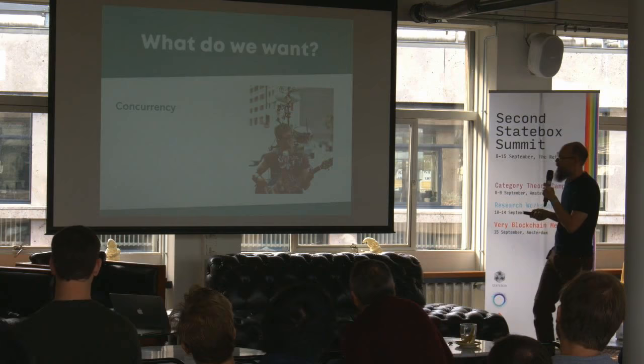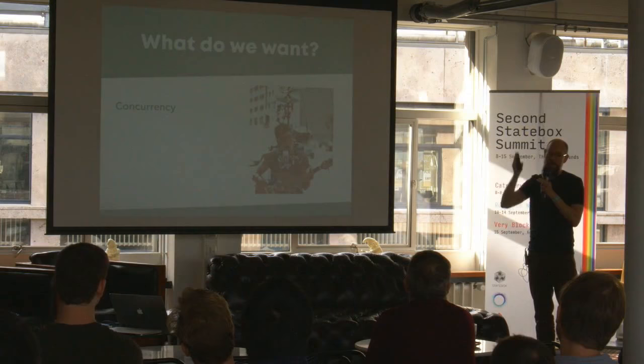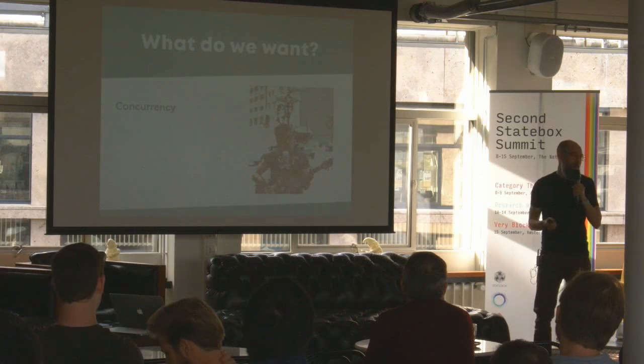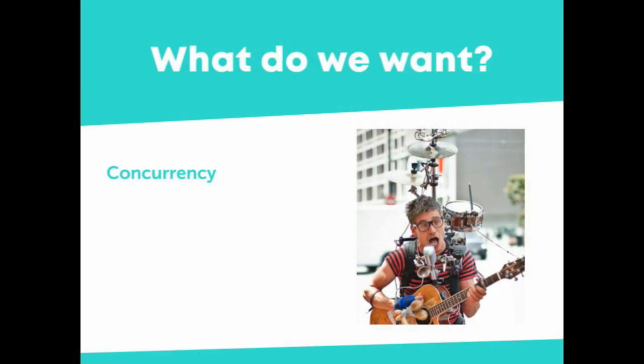Concurrency: in the real world, there are a lot of things happening at once — things aren't in one neat program flow. We want to be able to model that. The simple state boxes I originally showed you can't really do concurrency, and that's why we need the extra richness and complexity of Petri Nets. That can help us a lot with real-world concurrency where different things are happening at the same time.